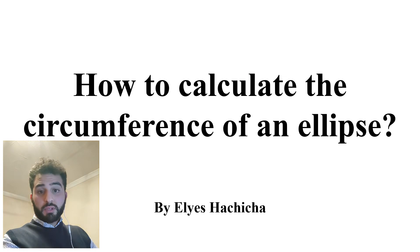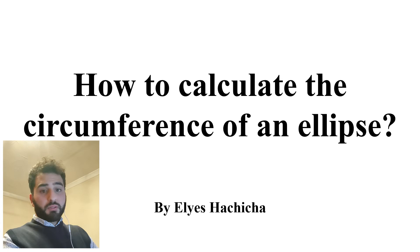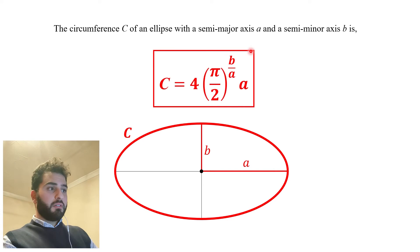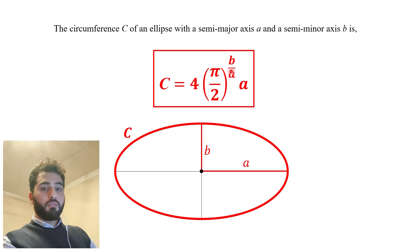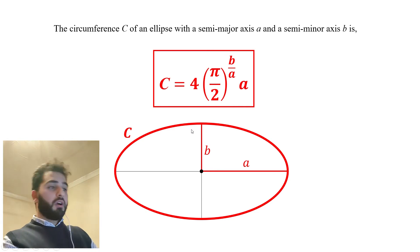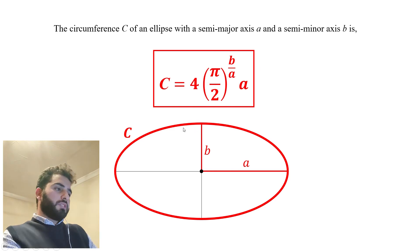Hi everyone. In this video I'm going to explain how to calculate the exact circumference of an ellipse with a formula that I have established. First I'm going to introduce this formula and then demonstrate how I came up with it. The formula is: the circumference C of an ellipse is 4 times pi over 2, raised to the power b over a, times a, where a is the semi-major axis and b is the semi-minor axis.